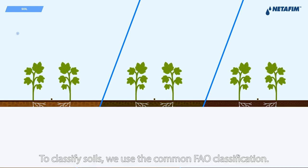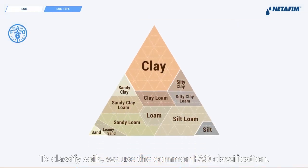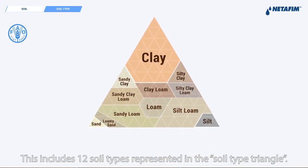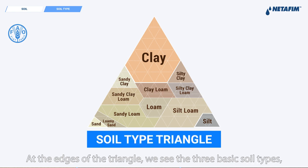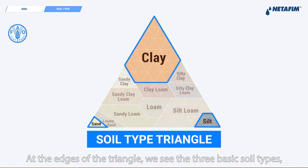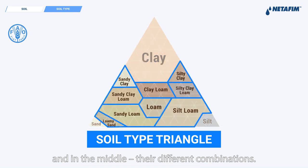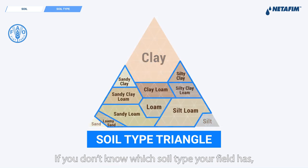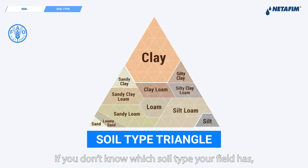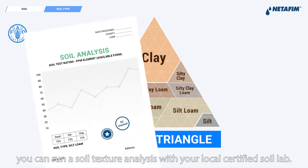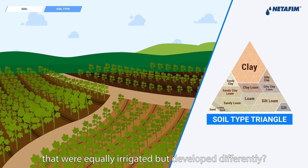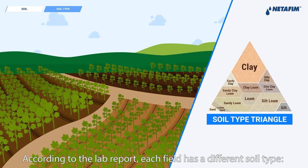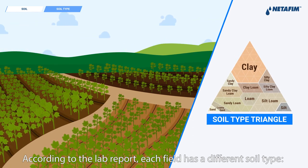To classify soils we use the common FAO classification. This includes 12 soil types represented in the soil type triangle. At the edge of the triangle we see the three basic soil types, and in the middle their different combinations. If you don't know which soil type your field has, you can run a soil texture analysis with your local certified soil lab. Remembering our cotton fields that were equally irrigated but developed differently — according to the lab report, each field has a different soil type.